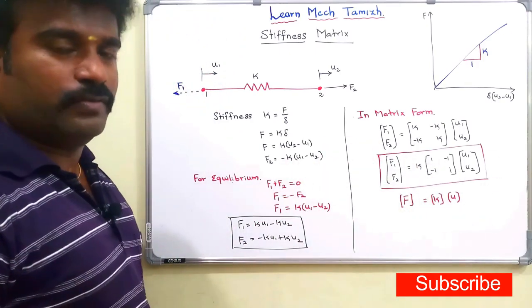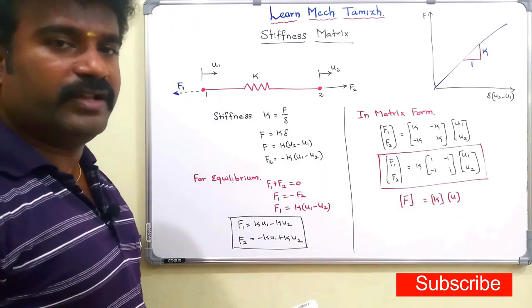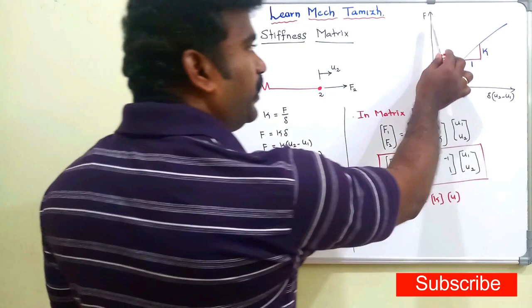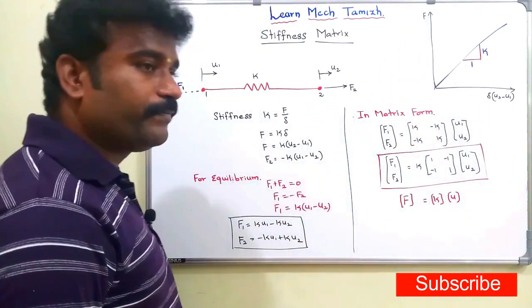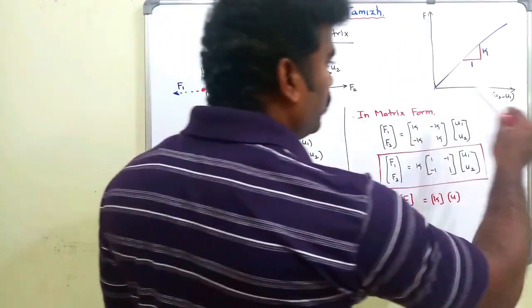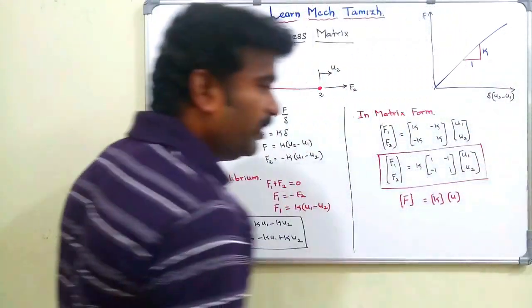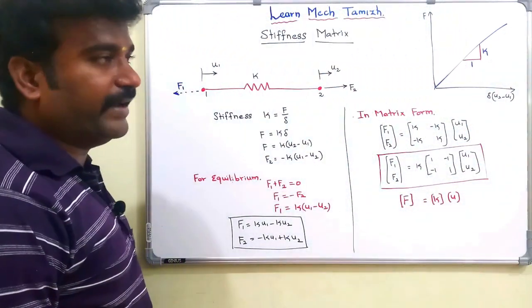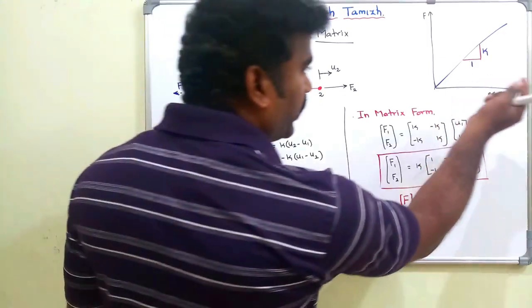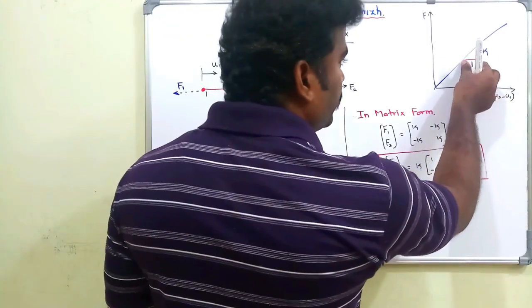If we plot that, we have delta-L on the x-axis and force on the y-axis. If we have a graph between the two points, it is inclined — we have a slope.